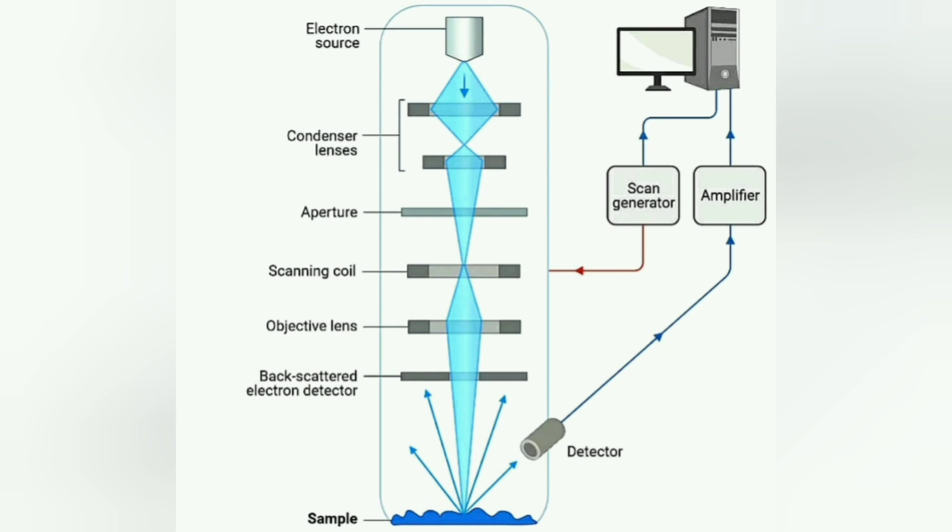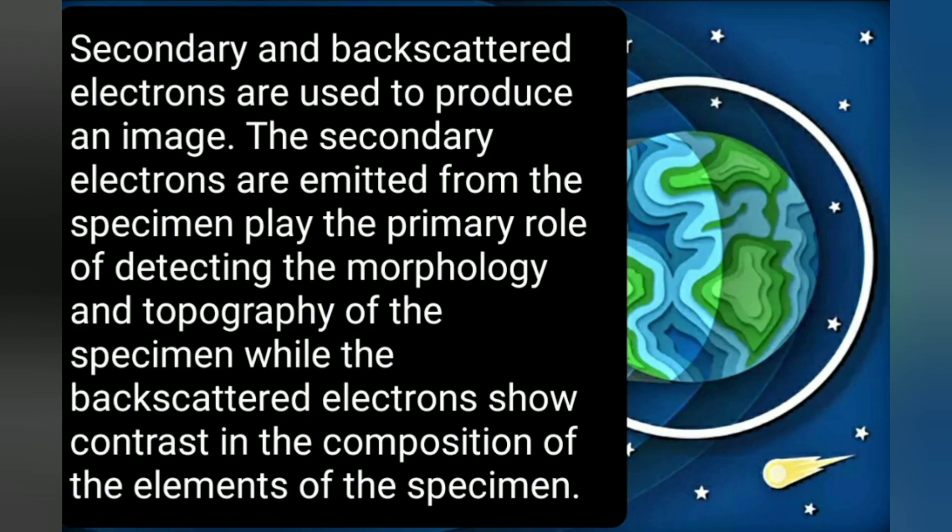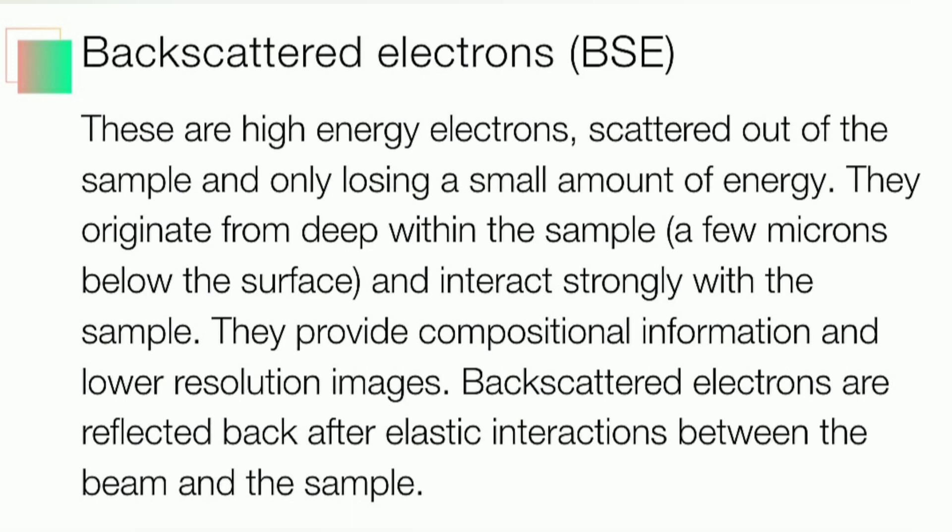We will learn about certain different terms like backscattered electrons and secondary electrons. These two terms are important. Backscattered electrons are high energy electrons scattered out of the sample and only losing a small amount of energy. They originate from deep within the sample and interact strongly with the sample. They provide compositional information and lower resolution images. These electrons are reflected back after elastic interaction between the beam and the sample.